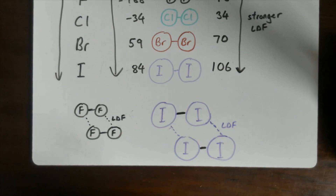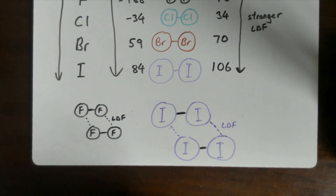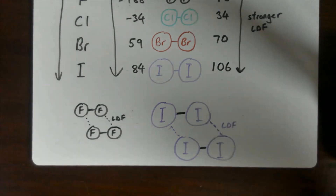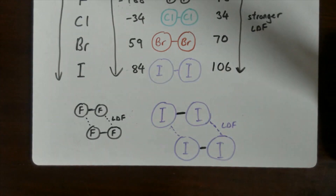To summarise, the more electrons you have in a molecule, the higher the boiling point, because there are stronger London dispersion forces between the molecules to be overcome.